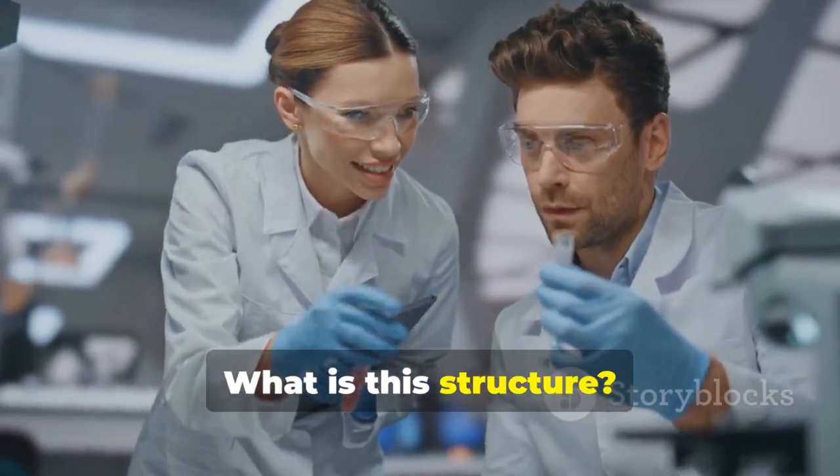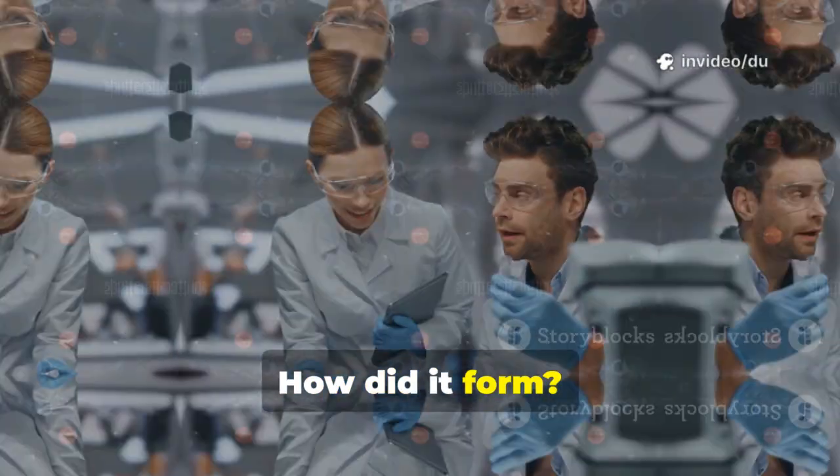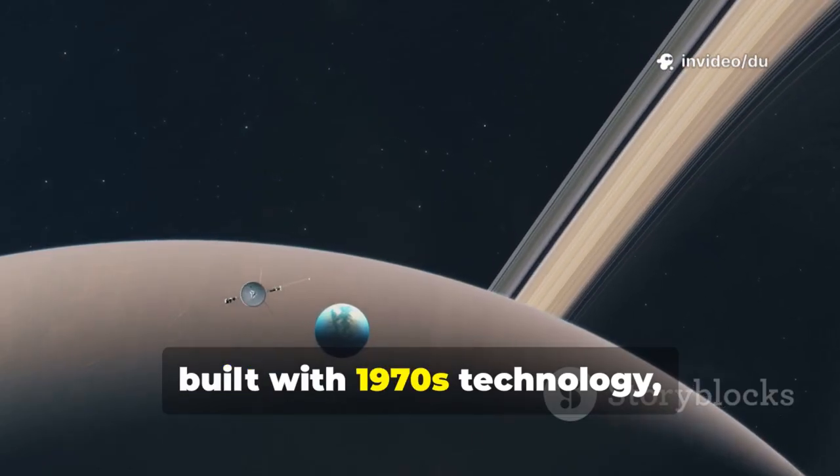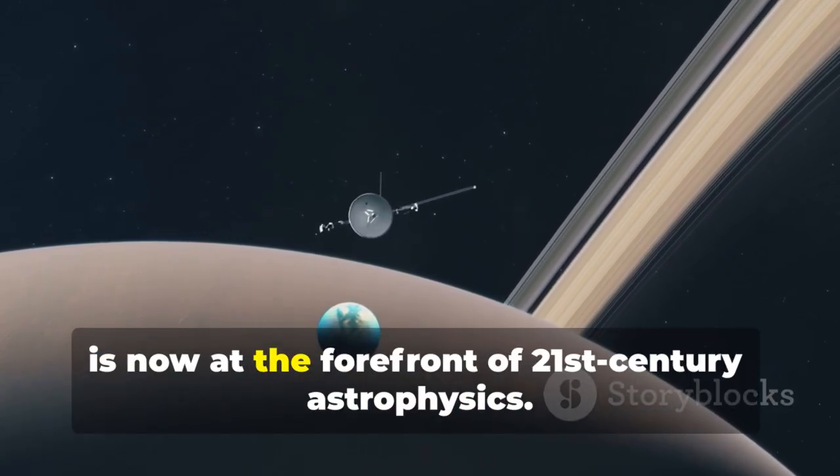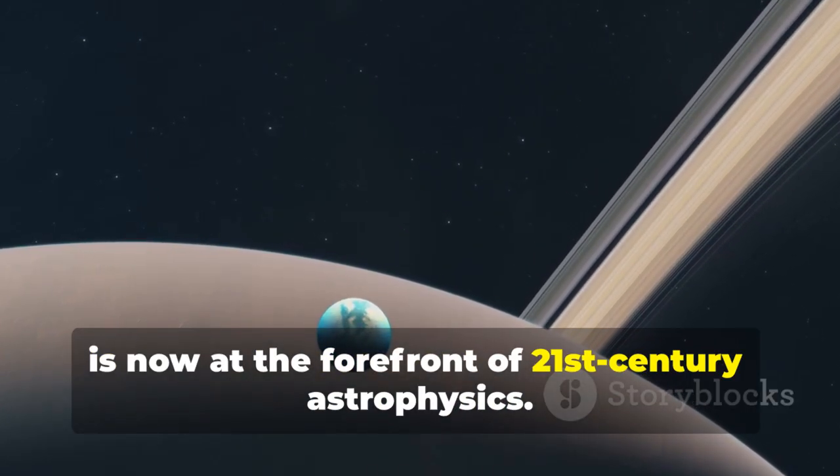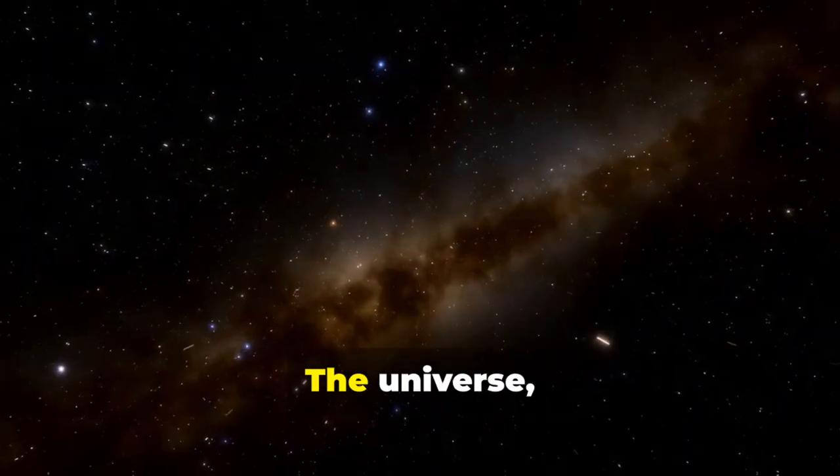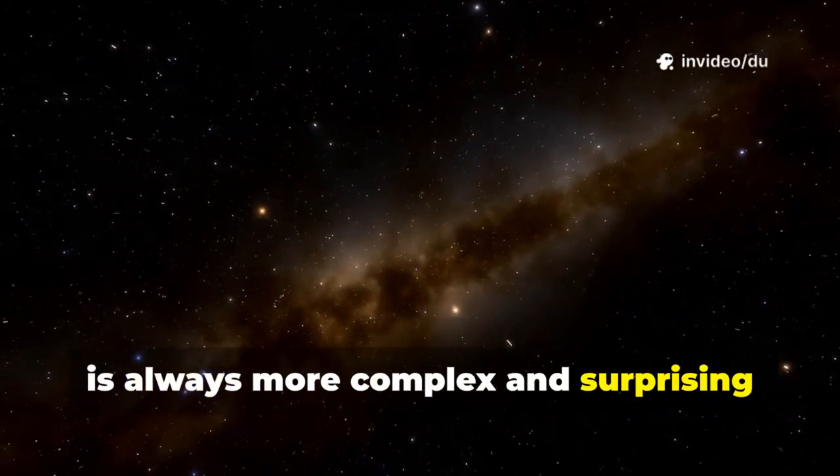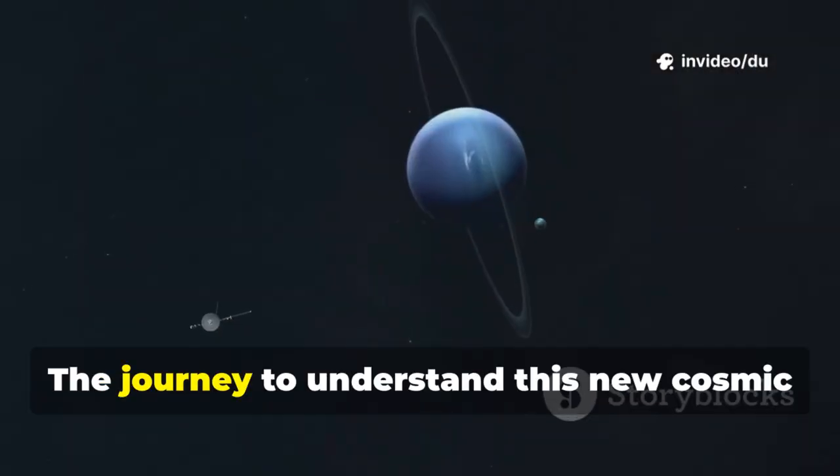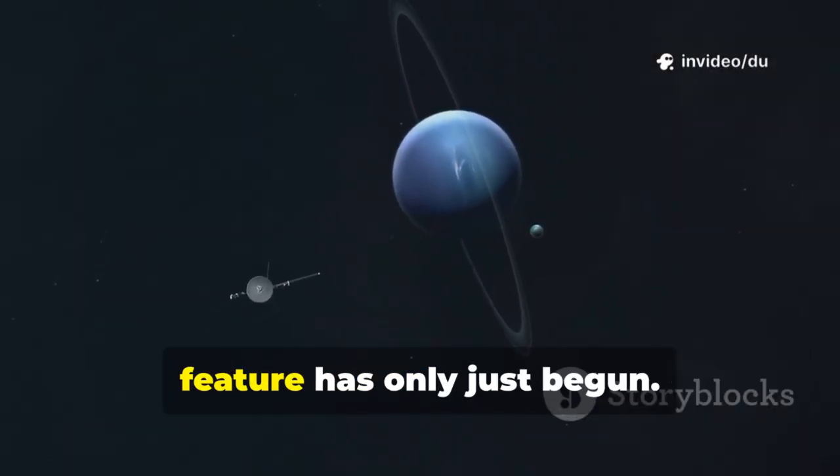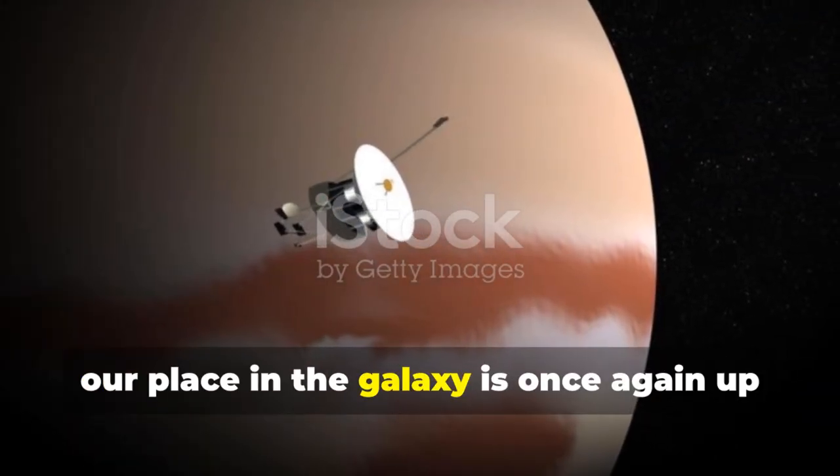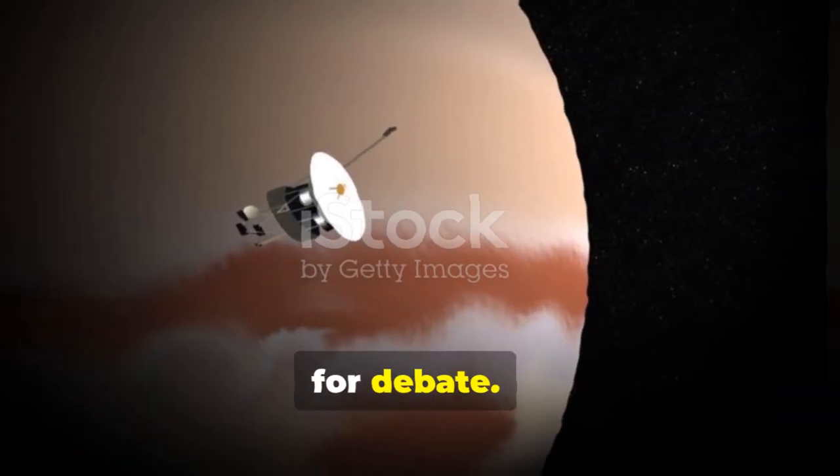What is this structure? How did it form? Is it unique to our solar system? Voyager 2, built with 1970s technology, is now at the forefront of 21st century astrophysics. The universe, it seems, is always more complex and surprising than we expect. The journey to understand this new cosmic feature has only just begun. And with it, our place in the galaxy is once again up for debate.